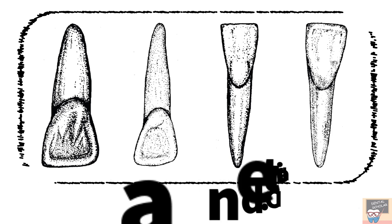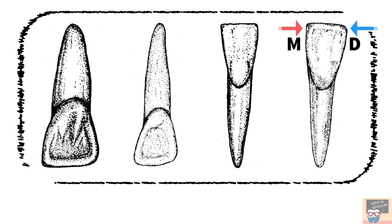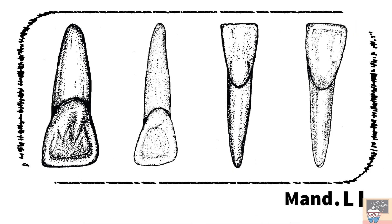In the fourth tooth, notice that the cingulum is offset to distal and the curvature of the cervical line is also offset to distal. The distal incisal angle is rounder than the mesio-incisal angle. So these features indicate that the tooth is a mandibular lateral incisor.